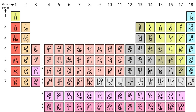Elements with similar chemical properties generally fall into the same group in the periodic table, although in the F block, and to some respect in the D block, the elements in the same period tend to have similar properties as well. Thus, it is relatively easy to predict the chemical properties of an element if one knows the properties of the elements around it.